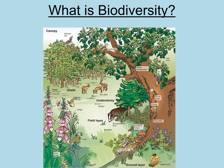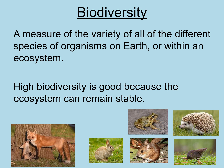The next thing to consider is what the word biodiversity actually means. Have a look at the diagram and think about it, then we'll move on. Biodiversity is a measure of the variety of all the different species of organisms on Earth or within an ecosystem. When we talk about the Amazon rainforest, for example, we might say its biodiversity is decreasing because we're chopping it down to grow crops or farm cattle. Chopping down the rainforest is a bad idea because high biodiversity is good — it means the ecosystem can remain stable.